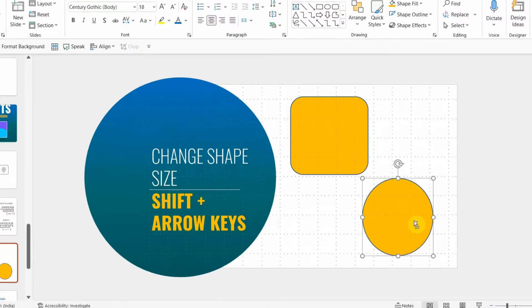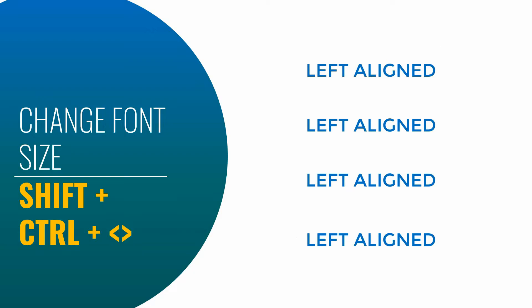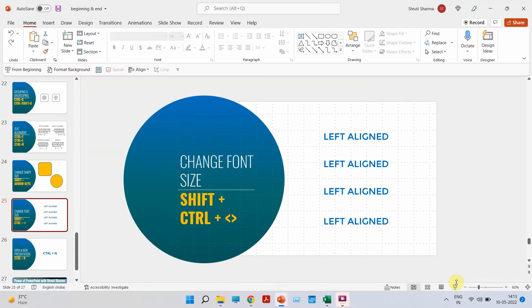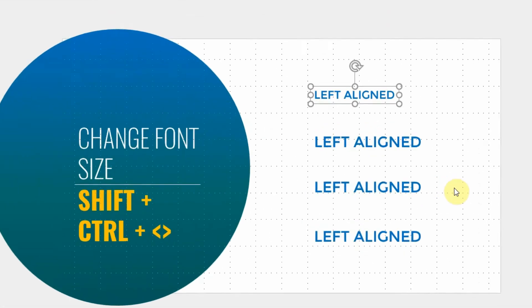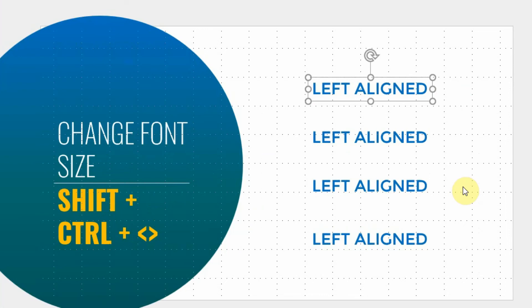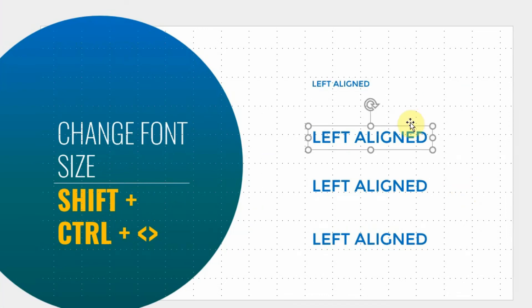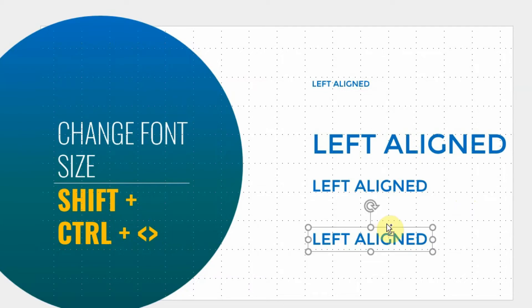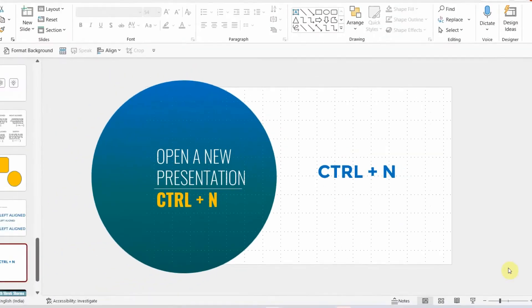Fourth shortcut: how to change font size. Normally you click on the text and use the increase/decrease size buttons or manually type the size. Instead, press Shift+Ctrl and use the greater than key to increase the font size, or the less than key to decrease it. Very simple and easy to use, and it saves a lot of time.